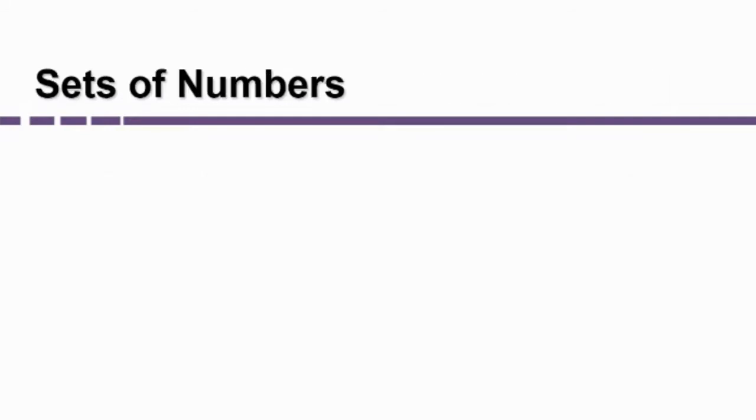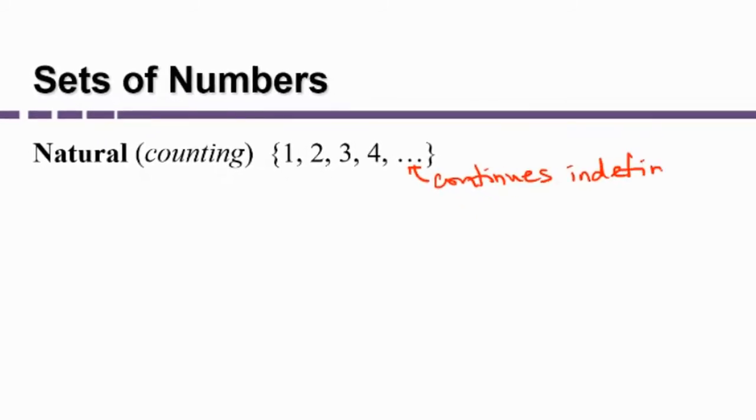In order to work with sets, we're going to need to know some basic sets of numbers. We've already talked about the natural or counting numbers are the numbers {1, 2, 3, 4, ...} and so on. And that's what this ellipsis is representing here. This means that the pattern just keeps going.